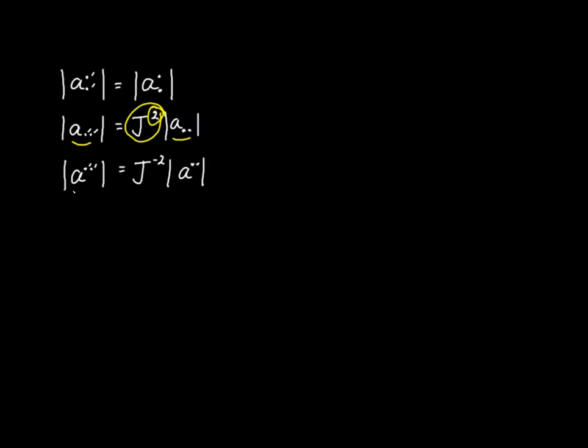Likewise, the determinant of a second-ranked tensor with two upper indexes is a relative tensor of weight negative 2, because of the exponent of this factor right here. Today we want to apply these results specifically to our covariant metric tensor.